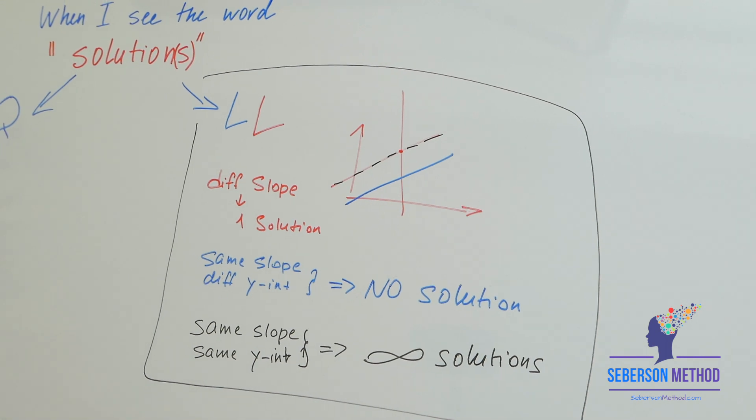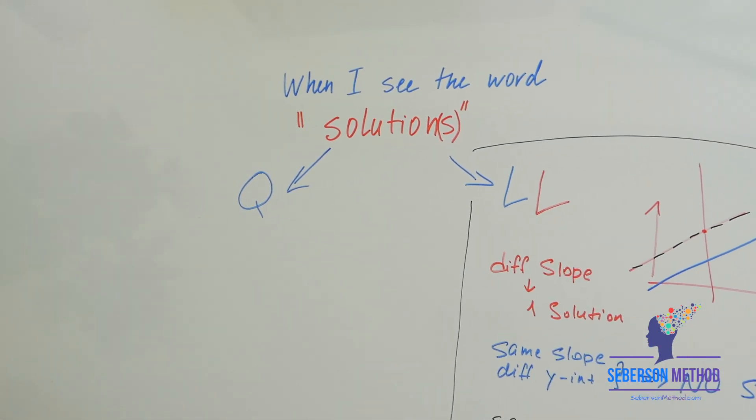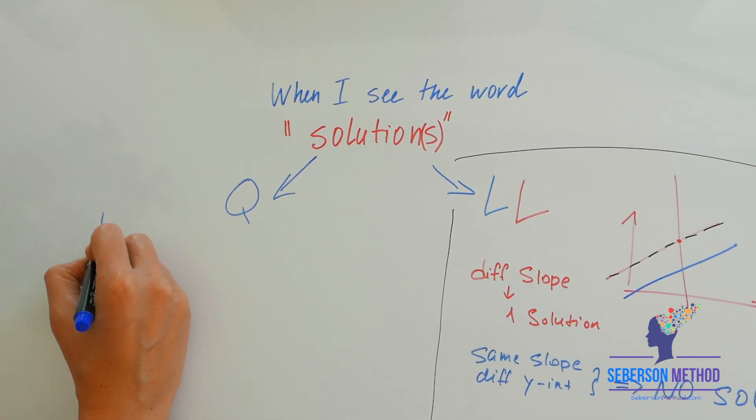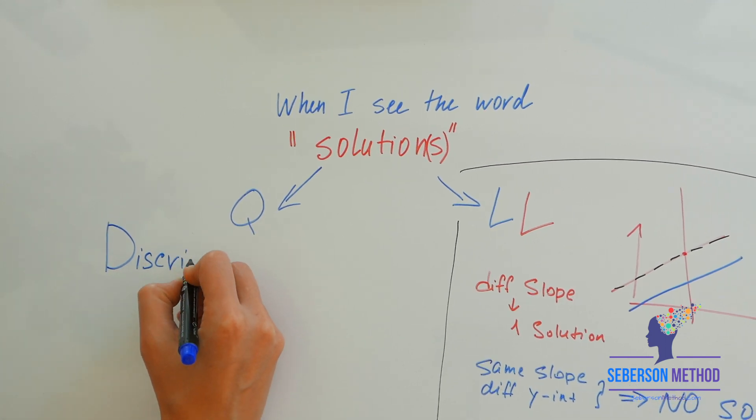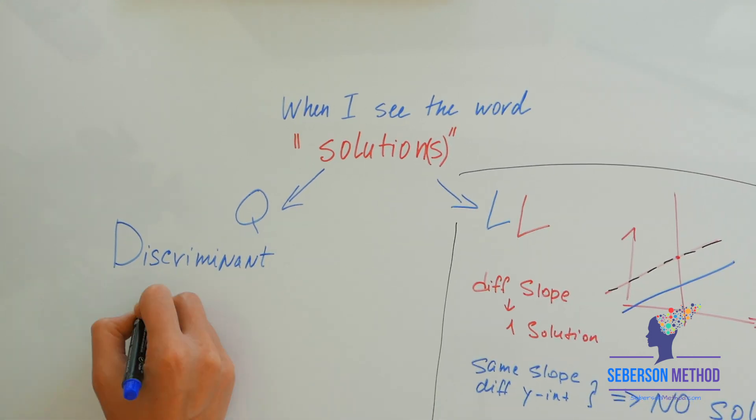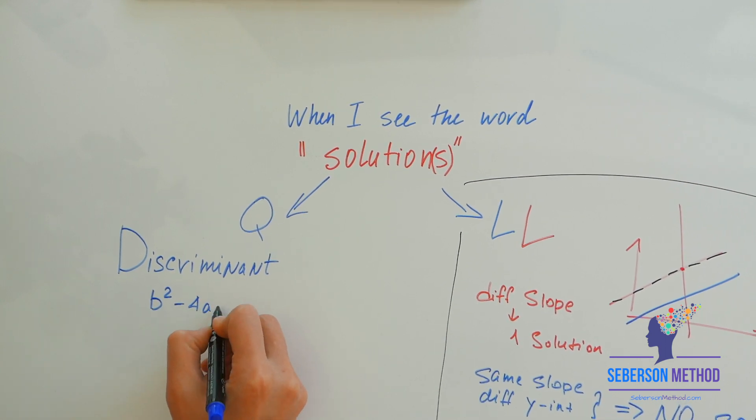Now, come over here. What if you're given a quadratic equation? With quadratic equation, you're not going to be using this. You're going to be using something called the discriminant.